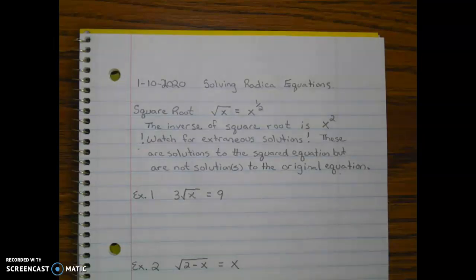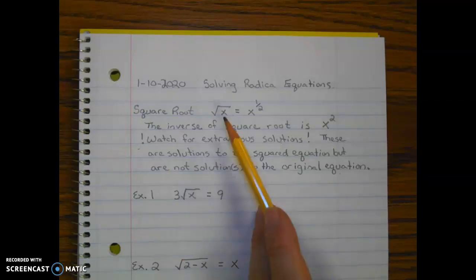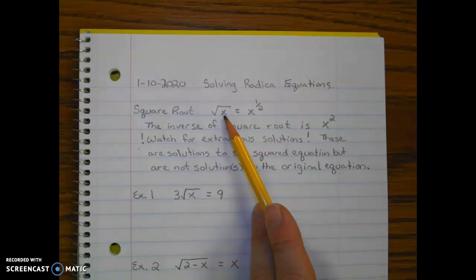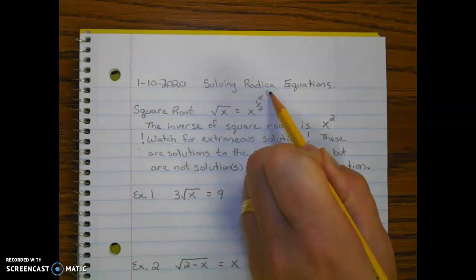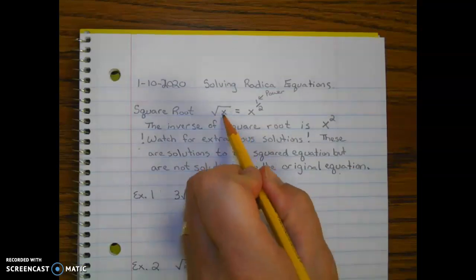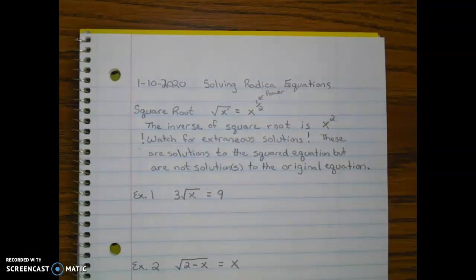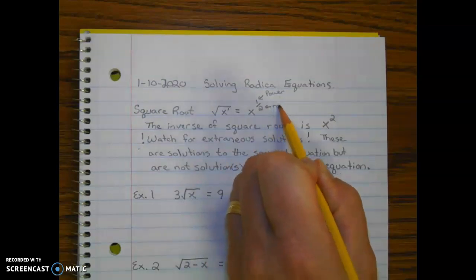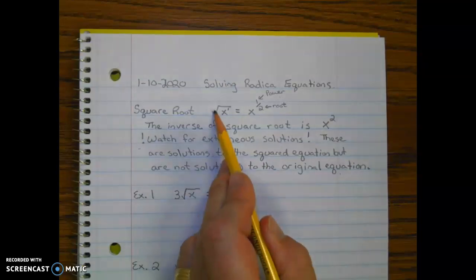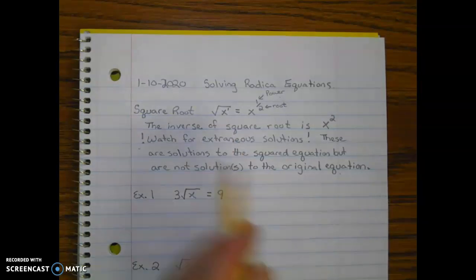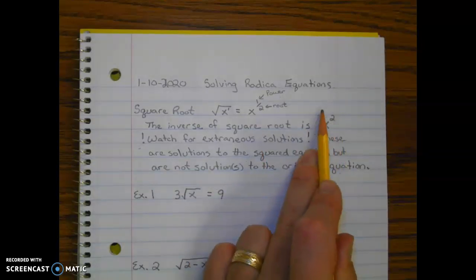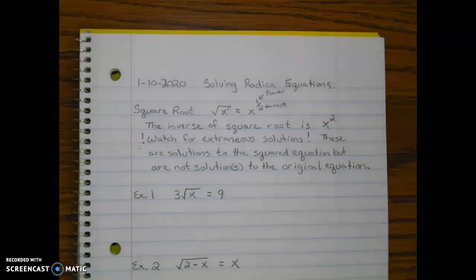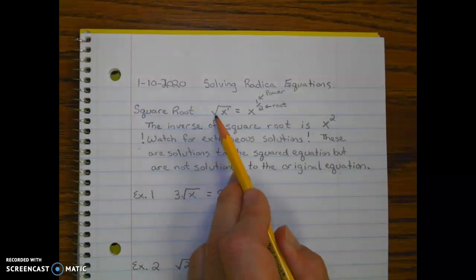Today's lesson is on solving radical equations. The first type we're going to look at is the square root. The square root of x can also be written as x to the one-half power, where 1 is the power on the radicand and 2 represents the root — the invisible 2 in the radical symbol. The inverse of a square root is squaring, which is important to know when solving, because we undo operations.